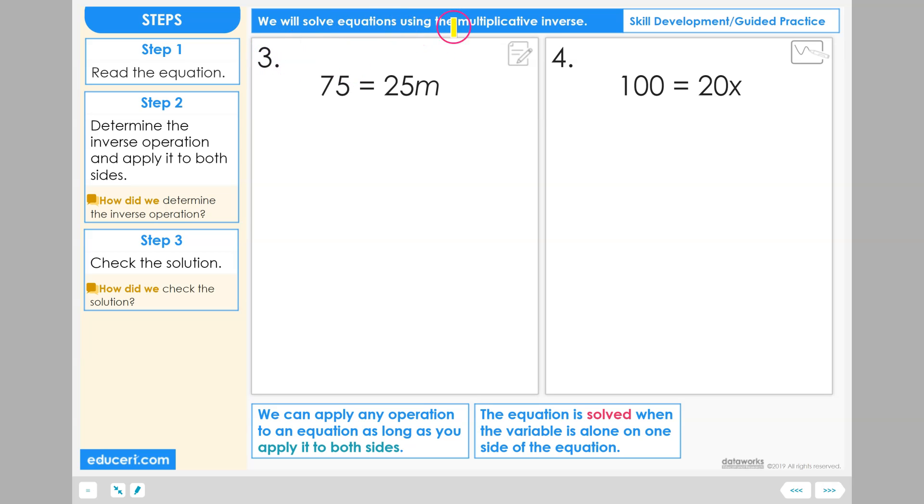Let's solve equation number three using the multiplicative inverse. Step 1, read the equation: 75 equals 25 times m.